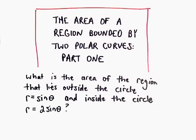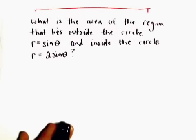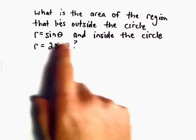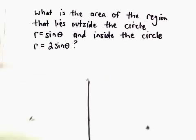Alright, in this video we're going to find the area of a region bounded by two polar curves. So we're going to ask ourselves, what's the area of the region that lies outside the circle r equals sine theta and inside the circle r equals 2 sine theta?